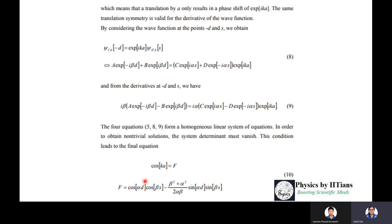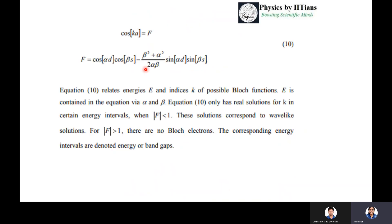As the periodic potential is periodic, we assume the solution in the form of Bloch function. After solving this, you will get the final equation as F = cos(Ka) = cos(αd)cos(βs) - [(β²+α²)/(2αβ)]sin(αd)sin(βs). I am not telling you individual steps. These steps can be derived very easily from any book.